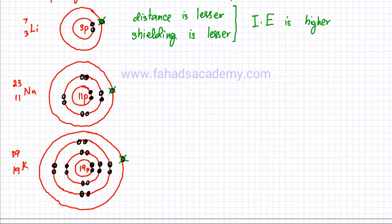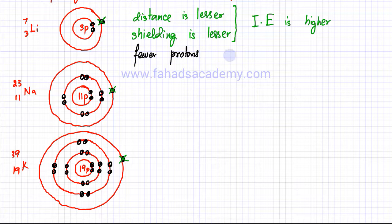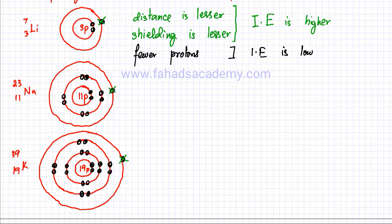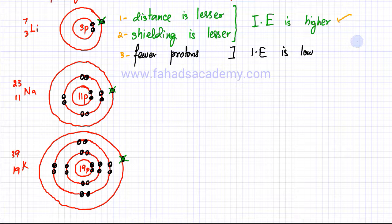However, there is one point: lithium has fewer protons. Fewer protons means lesser nuclear charge, which would suggest that ionization energy is going to be low. But if you account for all three factors affecting ionization energy, two are suggesting ionization energy is higher and one is suggesting it is lower. So the overall effect is that the ionization energy is higher because two factors outweigh one.